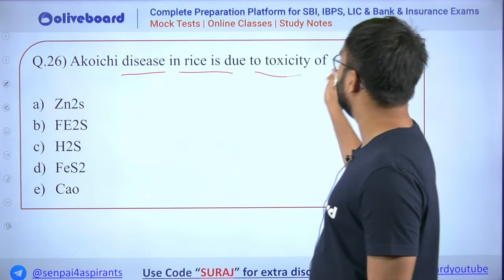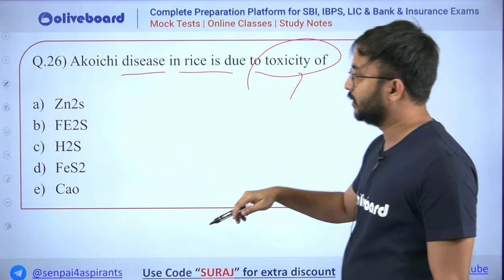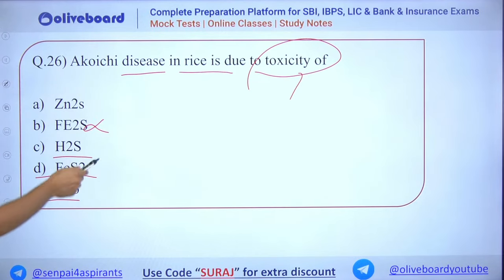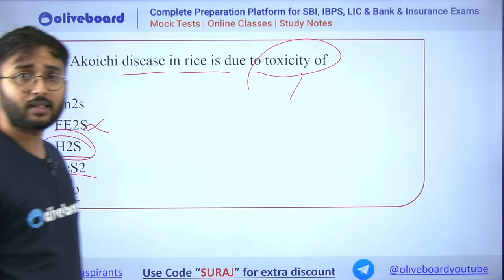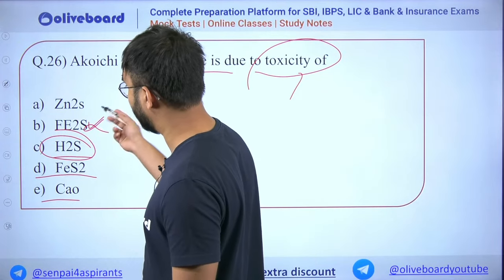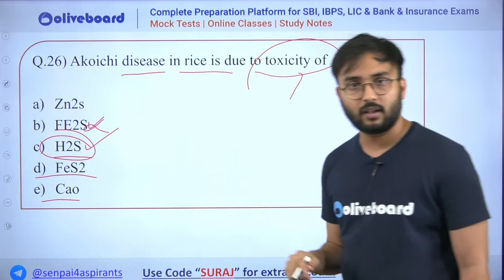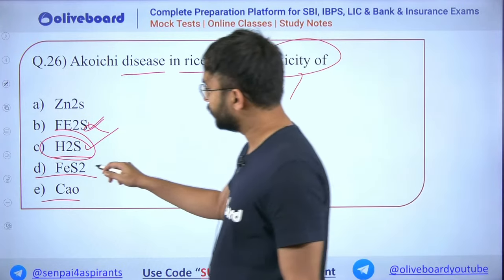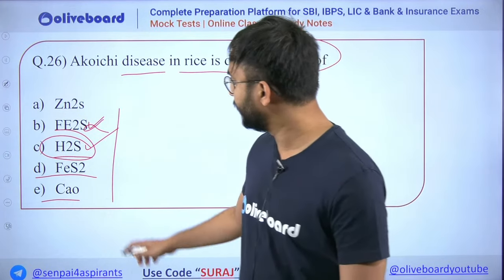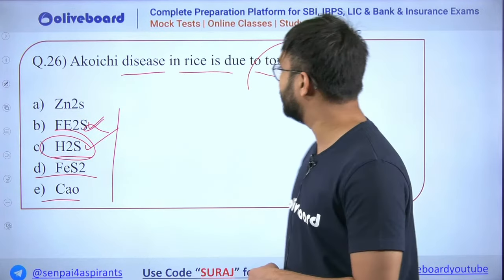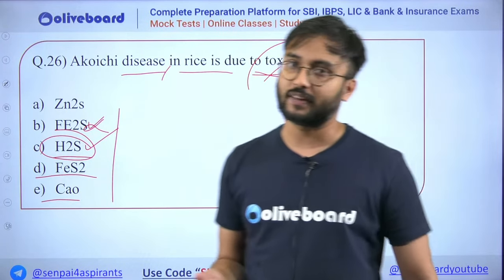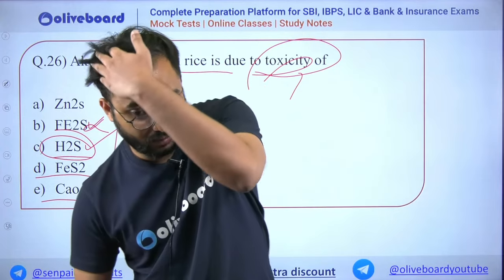Next: Akoi chi disease in rice is due to which compound — ZnS, Fe, FeS2, CaO, or H2S? The answer is hydrogen sulfide (H2S). FeS2 is ferrous sulfide, H2S is hydrogen sulfide. Hydrogen sulfide in the soil causes akoi chi disease in rice.